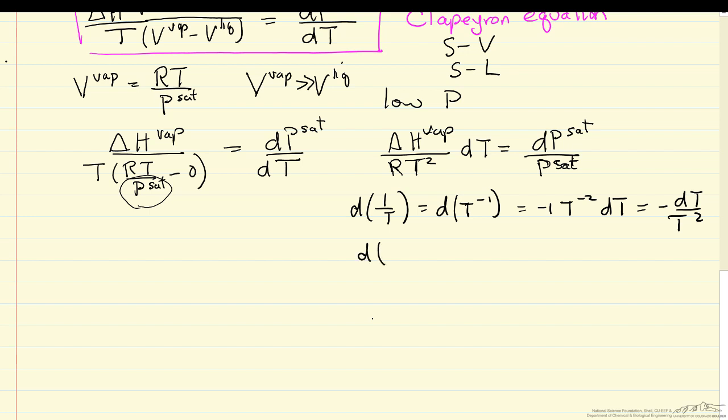And likewise, we can look at the differential of the natural log of P_sat, and that's equal to one over P_sat times the differential of P_sat. So you can see we're going to make the substitutions into this equation. We're going to substitute for this term, and then of course the right side. And we make that substitution,